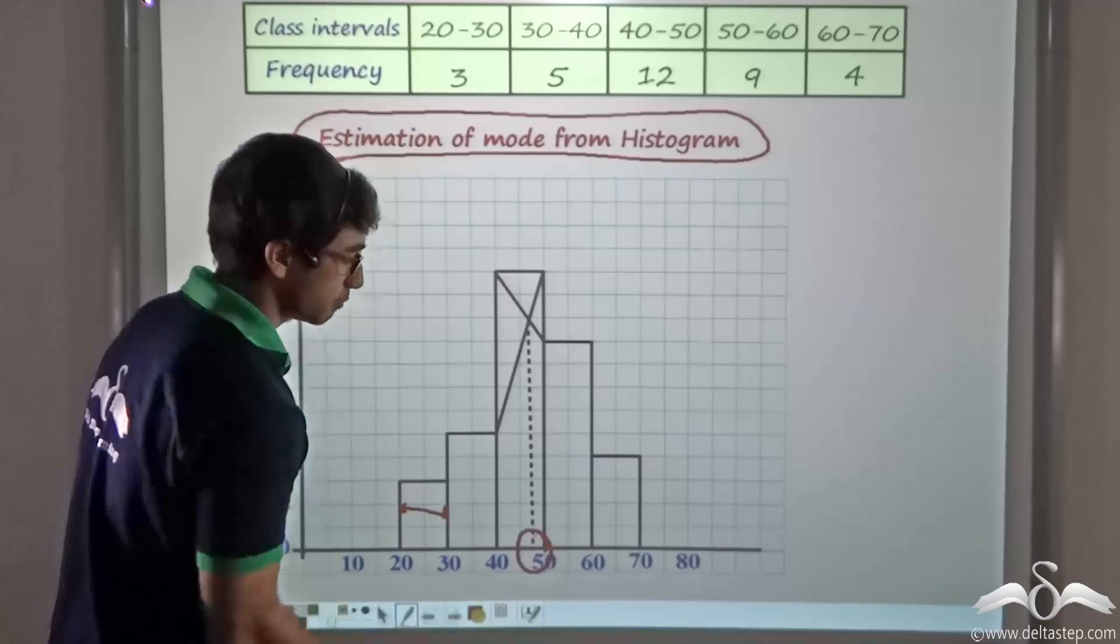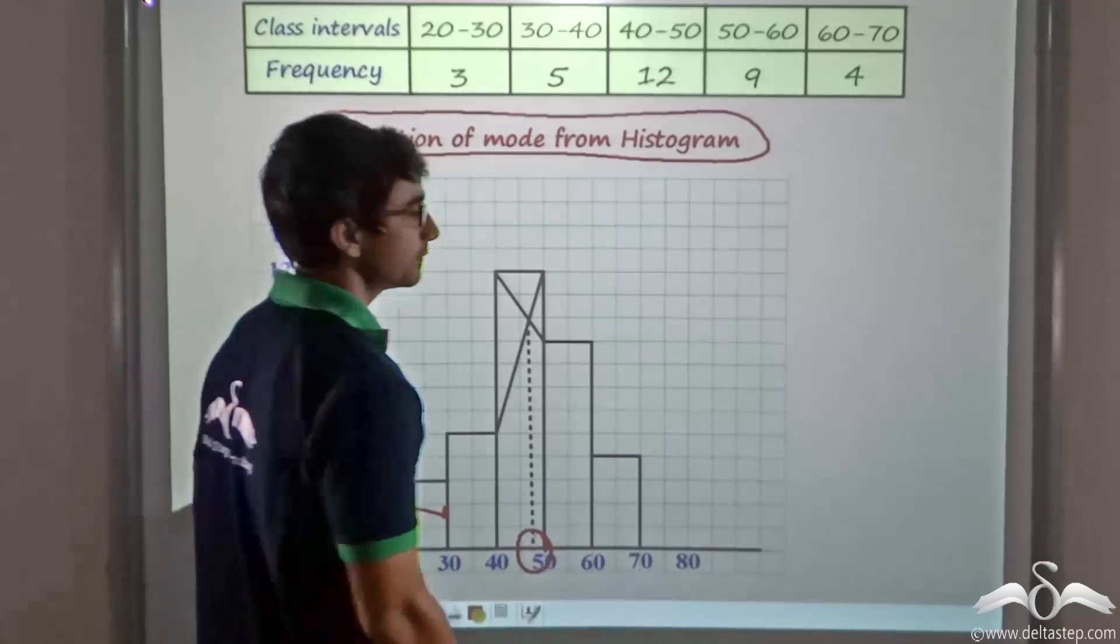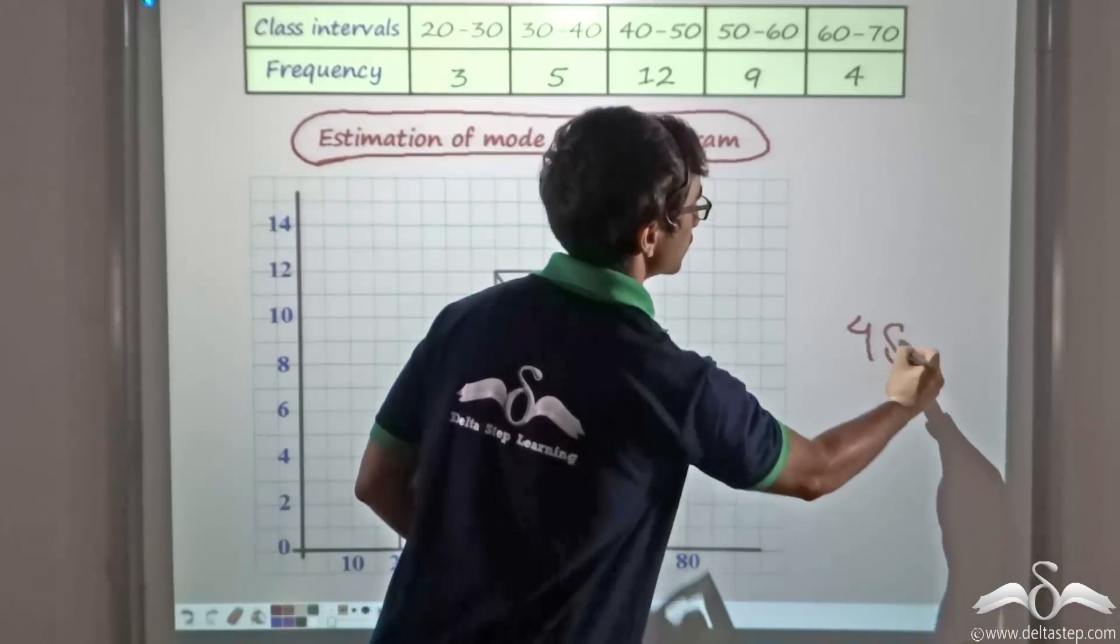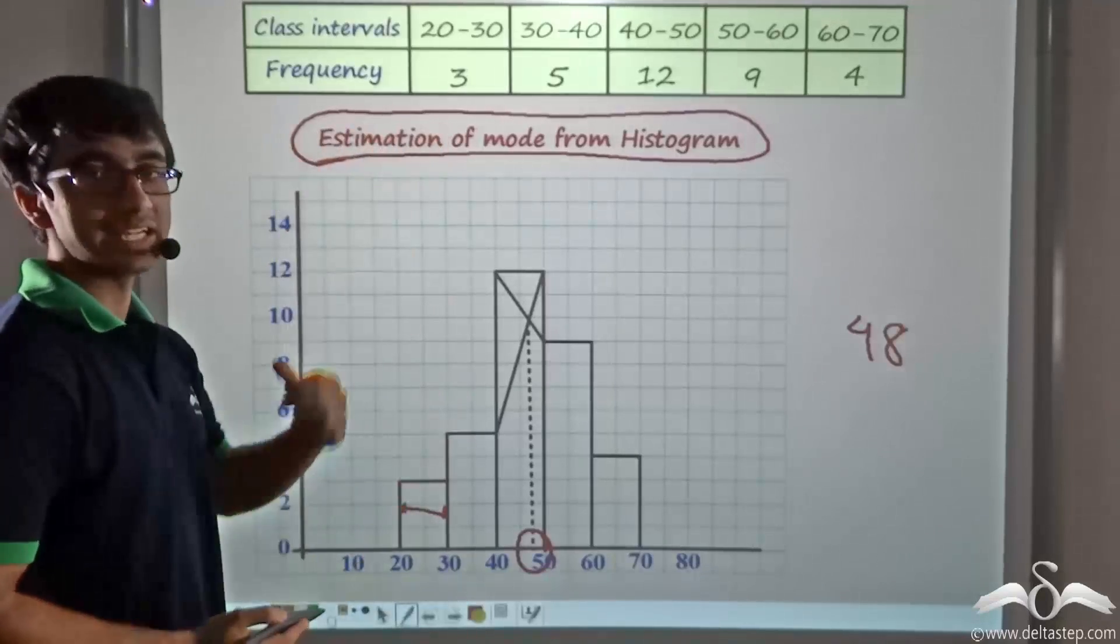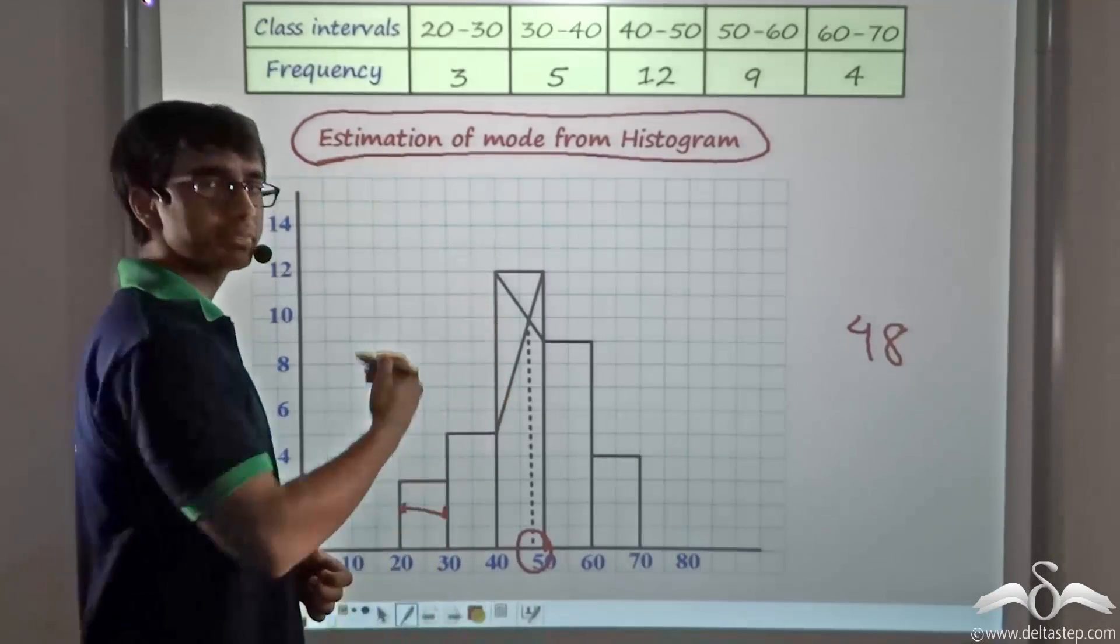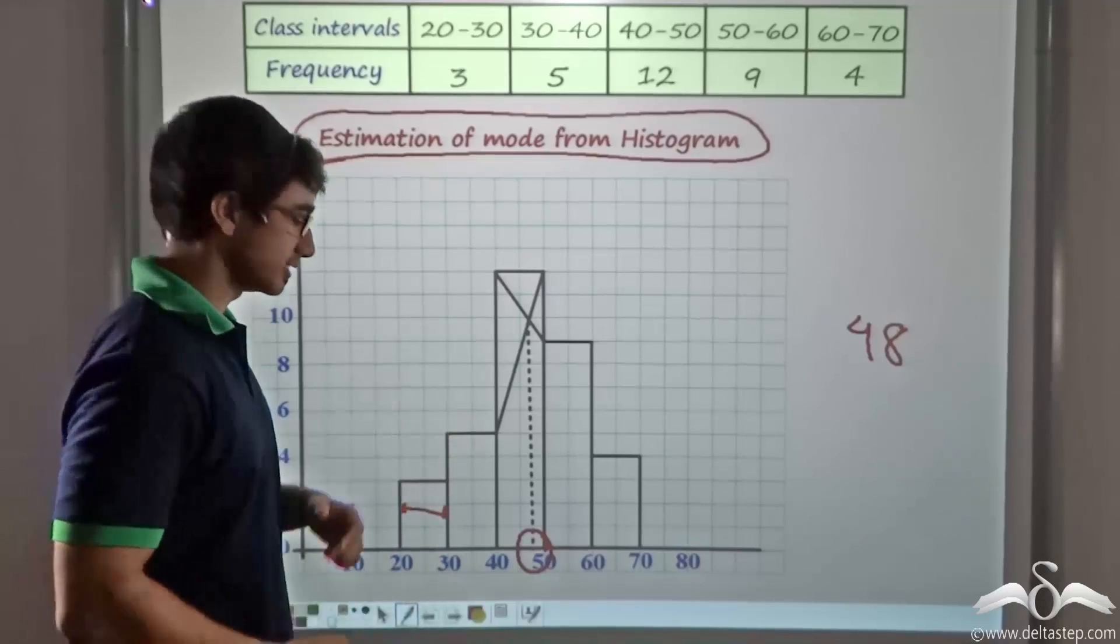This particular point, which as you can see corresponds to a value of about 48, gives us the mode of the given data set. This is how in a very simple manner we can calculate the mode.